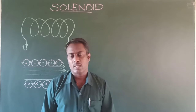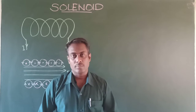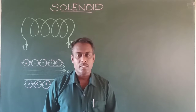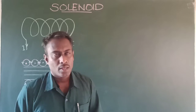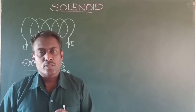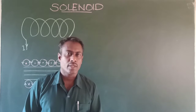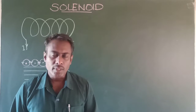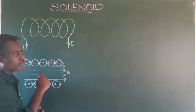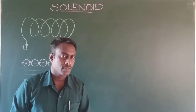So what is a solenoid? How can it produce a uniform magnetic field around it or inside it, and what is its magnitude? These points we are going to discuss in this session. A solenoid consists of an insulating long wire wound around a cylindrical pipe in the form of a helix. The length of the wire is very large compared to the diameter of the wire.